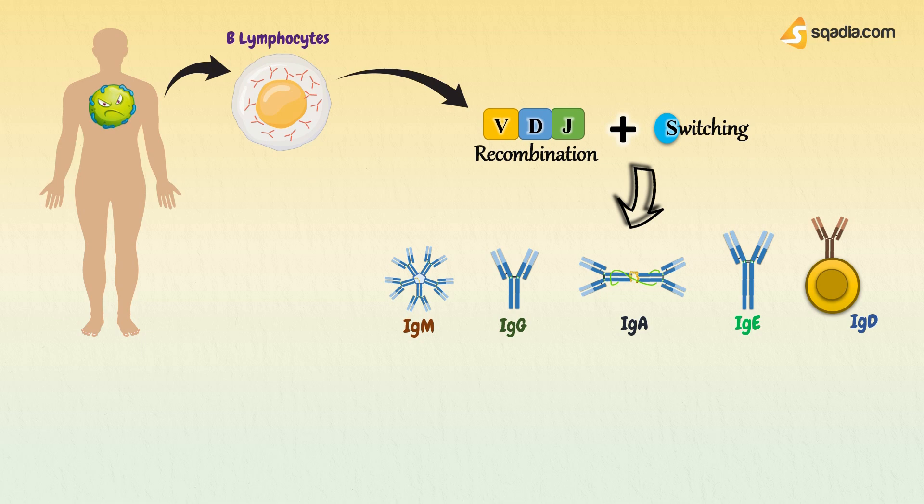And with different VDJ combinations, the one that fits well with the antigen, for example IgG, will be selected. And so B cell will start to produce number of clones of that particular antibody as it is found effective against that particular invading antigen. Hence, this process is also known as class switching.